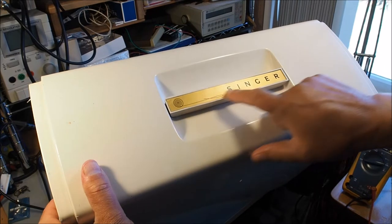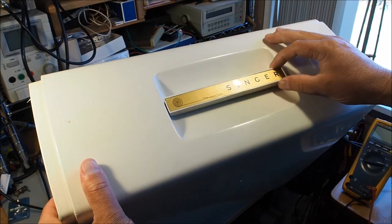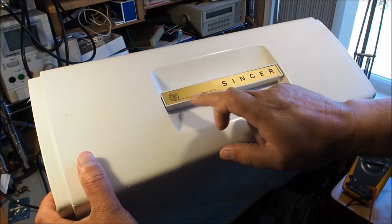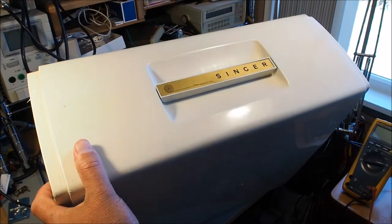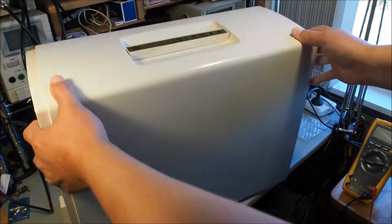You can see the label on the top there, a gold background with the black Singer brand name and a bobbin. The bobbin winding is quite different in these machines.